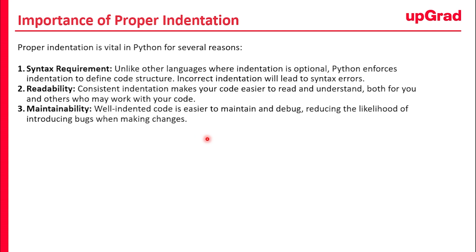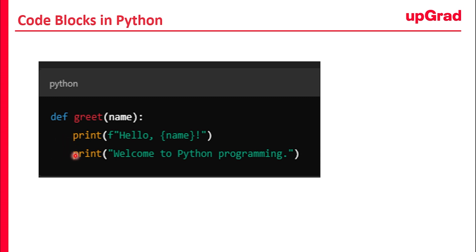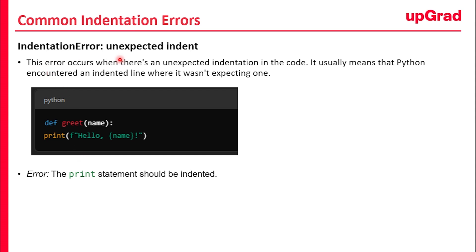When talking about indentation, there are essentially three types of errors you would find. Number one is the indentation error: unexpected indent. Number two is indentation error: unindent does not match any outer indentation level. The third one is tab error: inconsistent use of tabs and spaces. Regarding the first error — unexpected indent — this error occurs when there is an unexpected indentation in the code. It usually means that Python encountered an indented line where it was not expecting one.